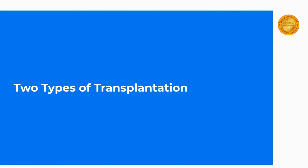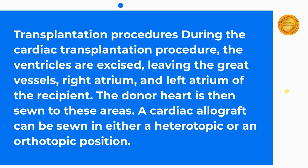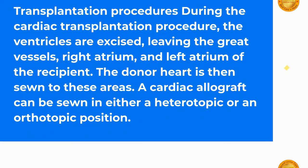Two types of transplantation exist. During the cardiac transplantation procedure, the ventricles are excised, leaving the great vessels, right atrium, and left atrium of the recipient. The donor heart is then sewn to these areas. A cardiac allograft can be sewn in either a heterotopic or an orthotopic position.